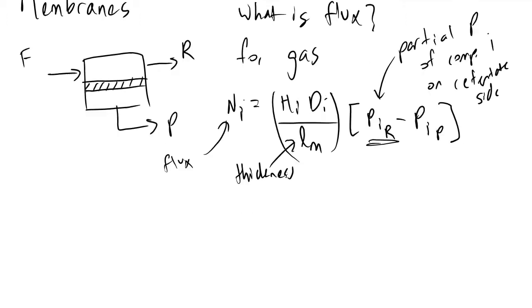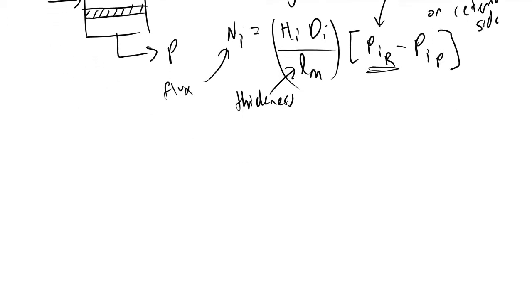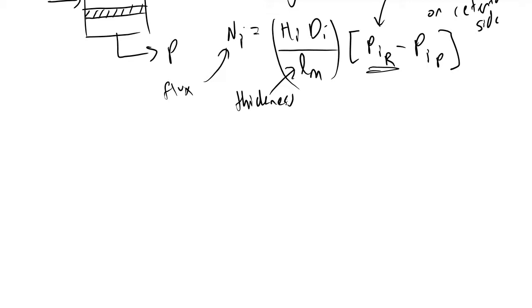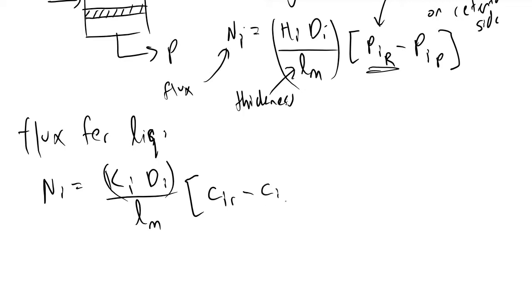Now for liquids, things will look mostly the same, except instead of partial pressures and Henry coefficients, we will be using equilibrium constants and concentrations. The flux for liquids will be equivalent to N sub i equals K sub i, the equilibrium coefficient for component i, times the diffusivity of component i divided by the membrane thickness times the driving force, which is the difference in concentration of component i between the retentate and the permeate side.